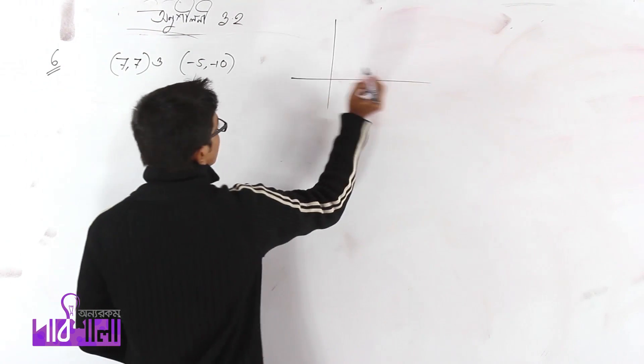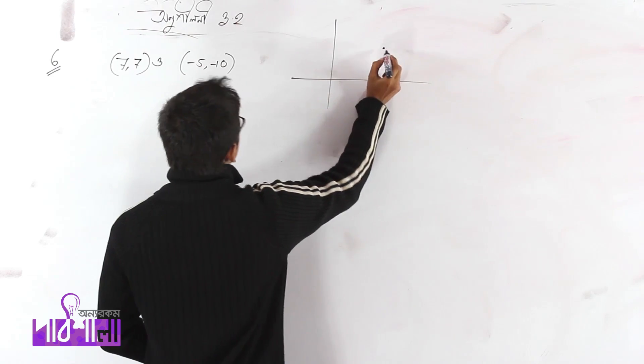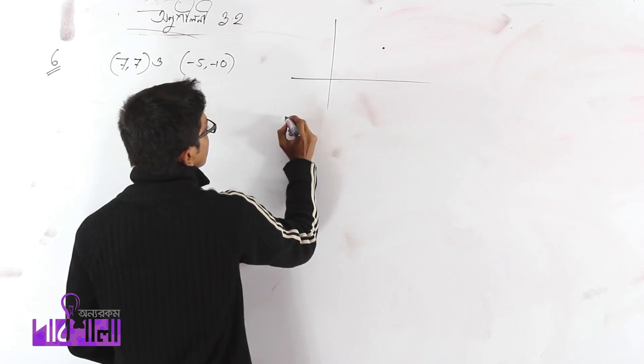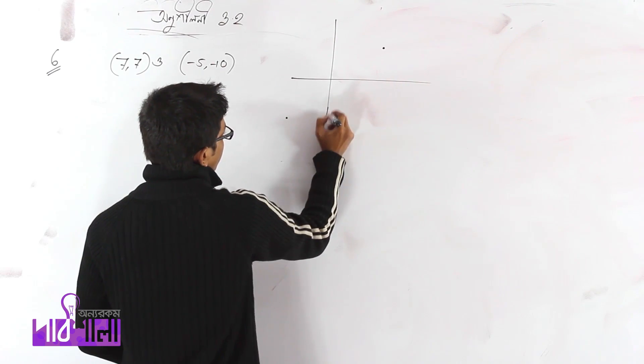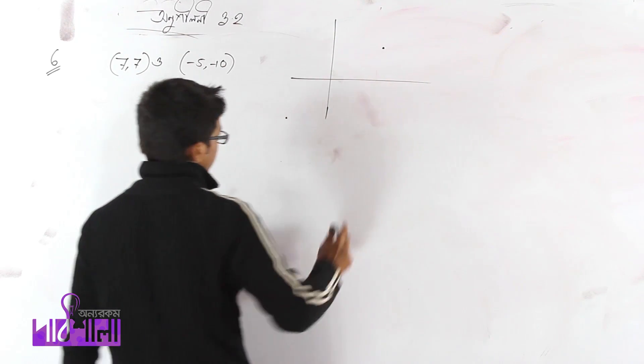So this is the first quadrant, the second quadrant, the third quadrant. We can't work with all of them.